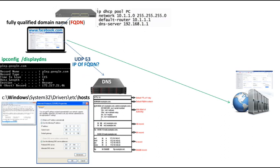You can then access the website of facebook.com, which is located remotely on the internet. Based on the IP address obtained from the DNS server, routing is performed through a number of routers and firewalls to fetch the web page hosted on the remote server. There are certain attacks that can be performed on all the components involved in this entire process.